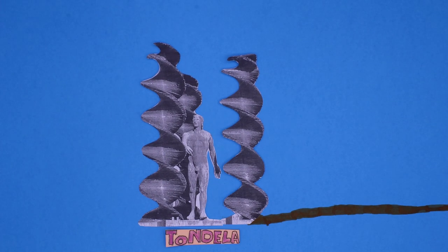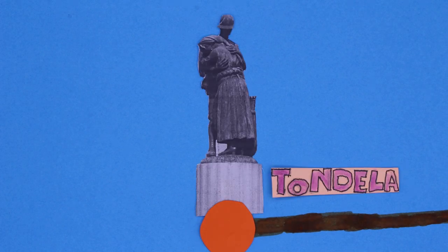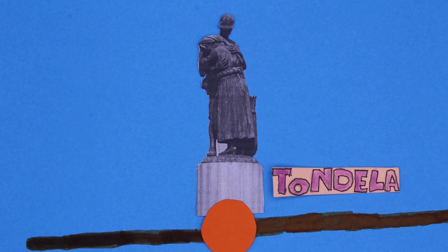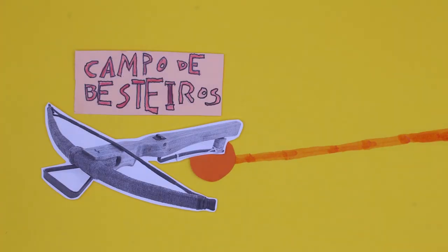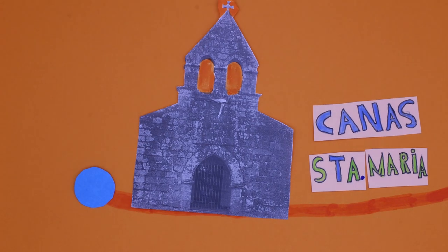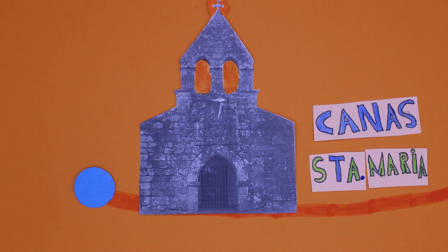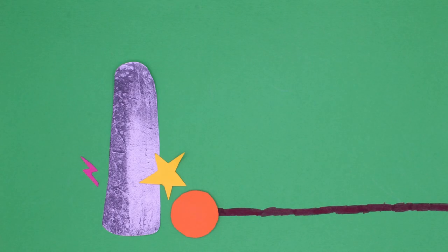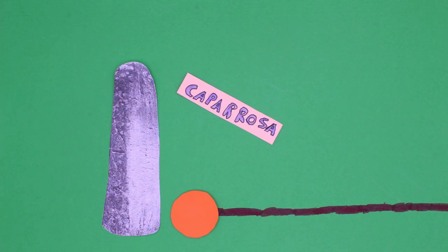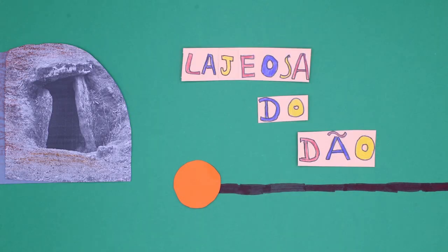The emigrant and the unknown soldier statue in Tonella. An old crossbow from Campo de Besteiros. The ancient Romanesque church in Canas de Santa Maria. A part of the Roman rope in Guardão. Some engravings from the Menhir in Caparrosa. And the Arquinha da Moura Dolmen in Legiosa de Dão.